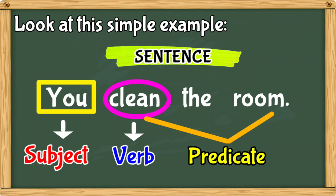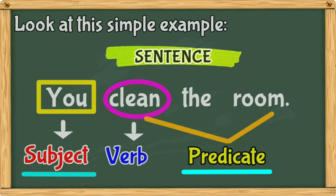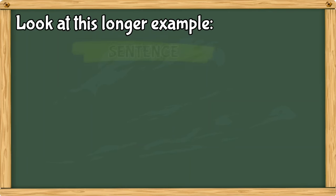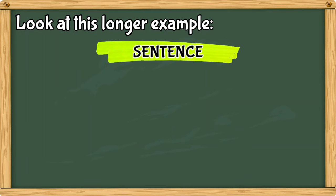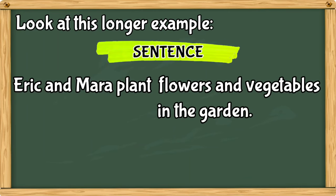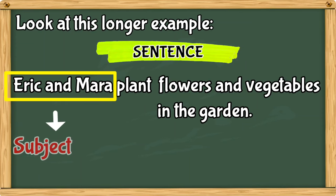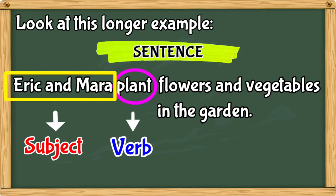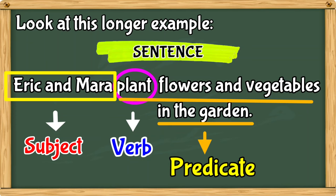Of course, a sentence can be longer or more complicated, but basically there is always a subject and a predicate. Take a look at this longer example of a sentence: Eric and Mara plant flowers and vegetables in the garden. Eric and Mara is the subject, plant is the verb. Plant flowers and vegetables in the garden is the predicate.